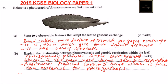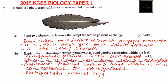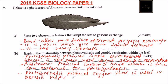For instance, photosynthesis produces oxygen, which is used in aerobic respiration. If you state any two out of the three points, you should be able to get two marks.